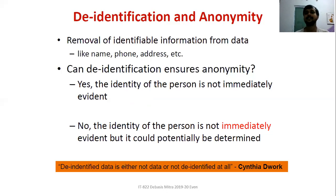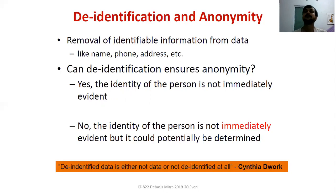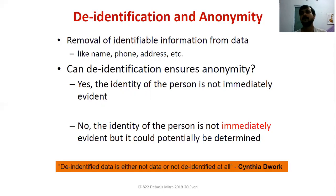This is captured in a famous comment by Cynthia Dwork, a data scientist working in data privacy at Microsoft Research: 'De-identified data is either not data or not de-identified.' The philosophy is that just removing information which appears to directly identify a person — like name, phone number, and address — may not make the whole dataset de-identified, because by linking it with other databases using the power of modern technology, you can re-identify the person. It is very difficult to ensure anonymity through de-identification alone.